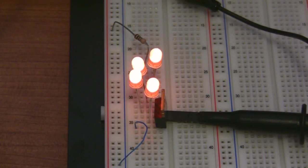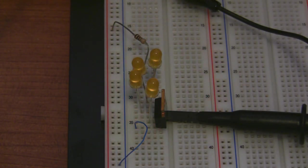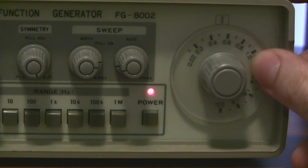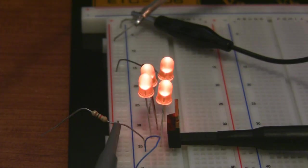Now I have to use a transistor here because a function generator on its own isn't powerful enough to power anything. By changing the frequency of the wave, I can change the rate that the LEDs blink.